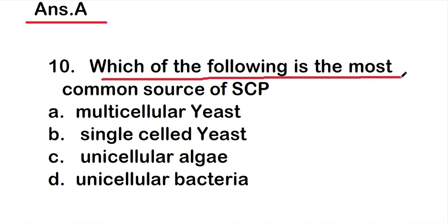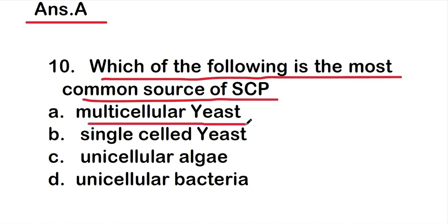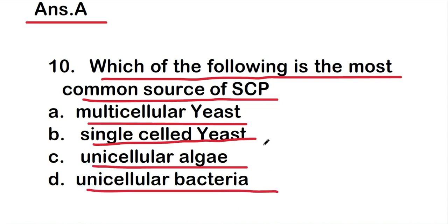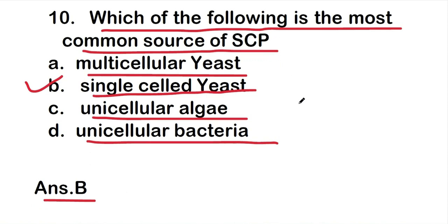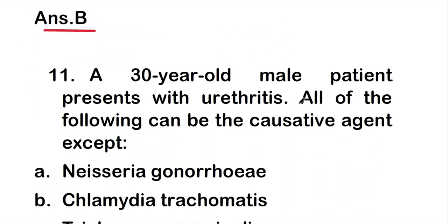Question 10: Which of the following is the most common source of SCP (single cell protein)? The options are multicellular yeast, single cell yeast, unicellular algae, or unicellular bacteria. The right answer is option B: single cell yeast. Single cell yeast is the most common source of SCP.